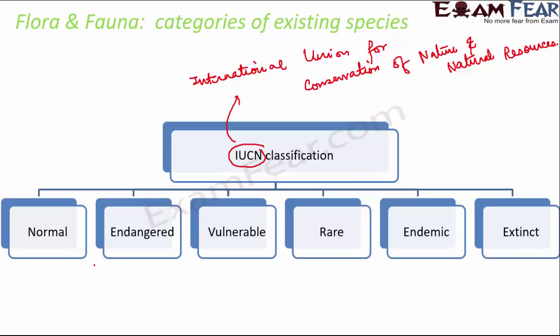IUCN has come up with a classification that tells us which category a particular plant or animal species belongs to. There are six categories: normal species, endangered species, vulnerable species, rare species, endemic species, and extinct species. This classification was created because there was an alarming situation where many plant and animal species were disappearing, and all living organisms need each other for survival.